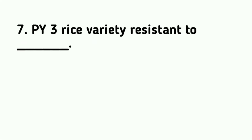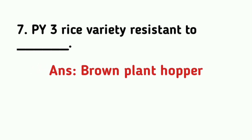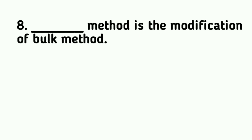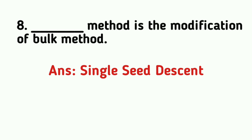Py3 rice variety is resistant to Brown Plant Hopper. DAS method is the modification of the Bulk method, also known as Single Seed Descent.